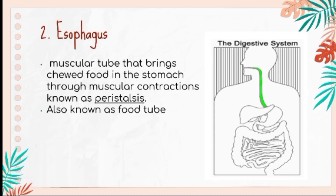The second is the esophagus. It is a muscular tube that brings chewed food to the stomach through muscular contractions known as peristalsis. It is also known as the food tube. After you put your food into your mouth, you chew it and then it goes down into your esophagus until it reaches your stomach. Always remember that the esophagus is also known as the food tube.